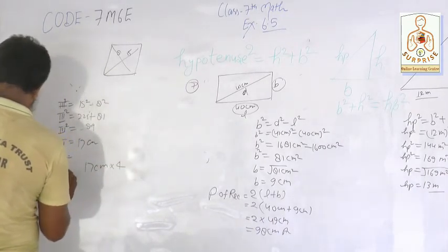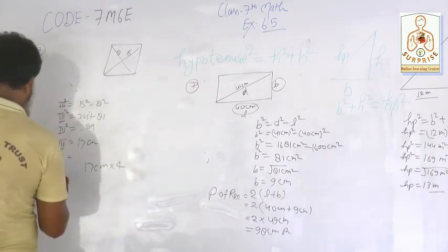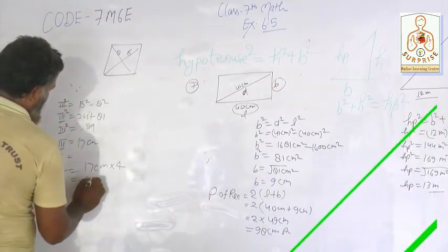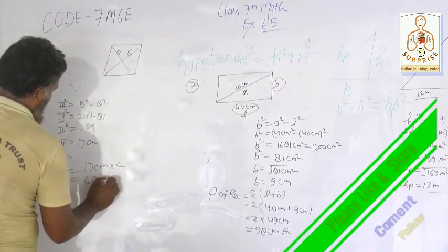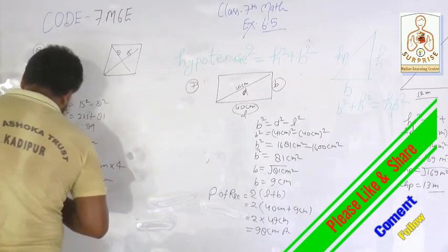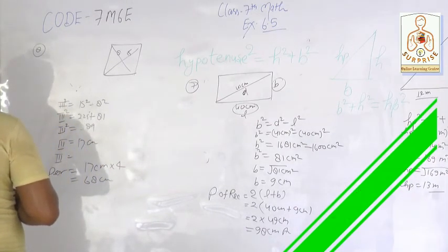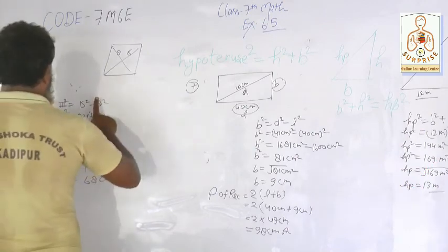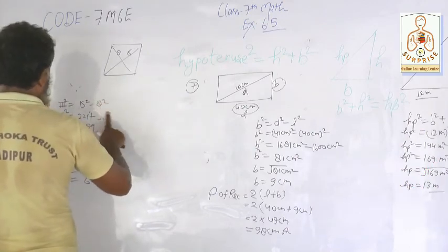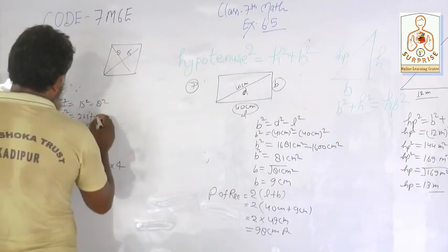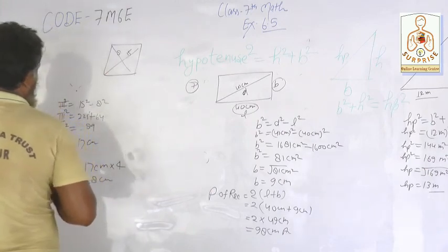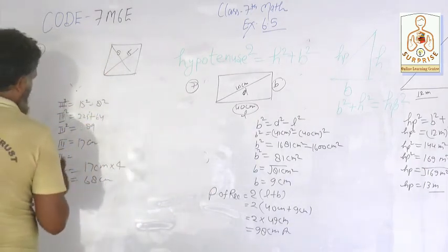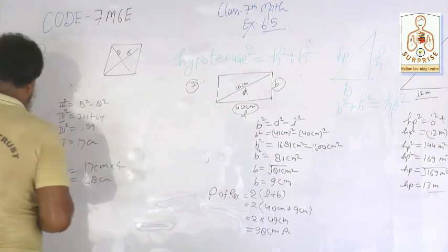If you understood the video, please tell me. 289 gives us 17 cm — 17 cm is the sincere answer for the side of the rhombus. Sorry, it was 64, not 88. Okay, so 289 is coming, 17 cm is the answer.